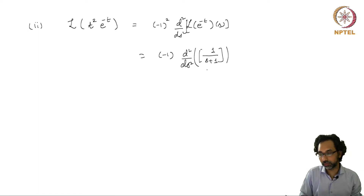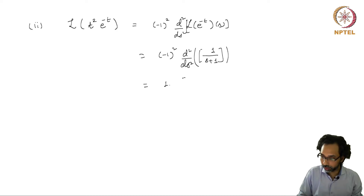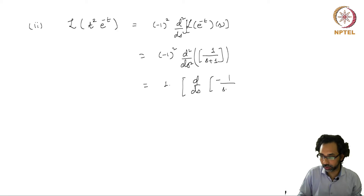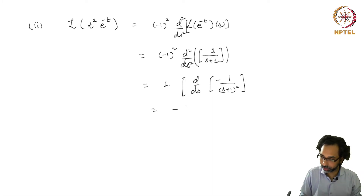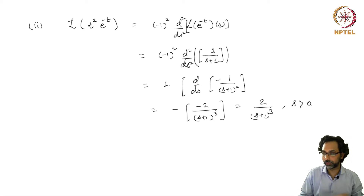So we have to differentiate 1/(s+1) twice. This is (-1)², so that factor goes away. It is just 1, and we have d/ds of -1/(s+1)². Taking the derivative once more, we get -2/(s+1)³. So in the end we get 2/(s+1)³, and this is valid for s greater than 0.